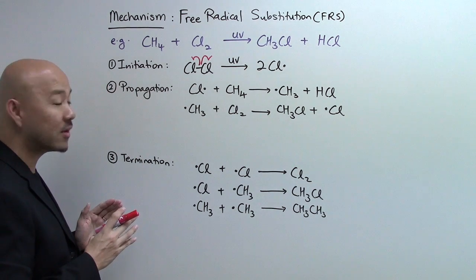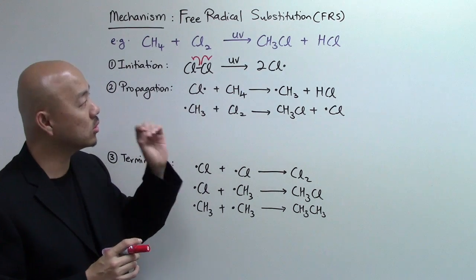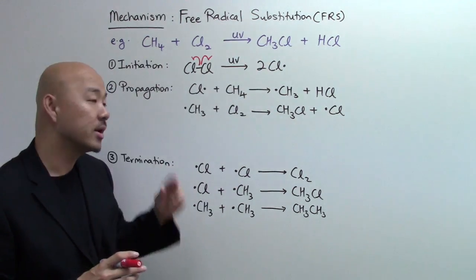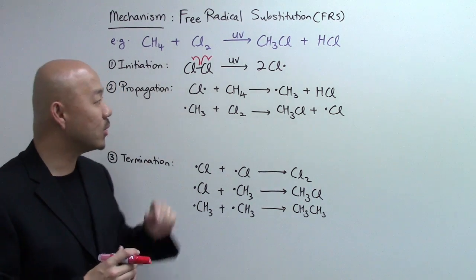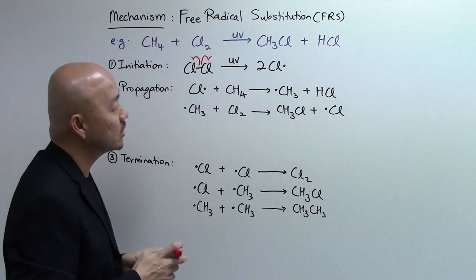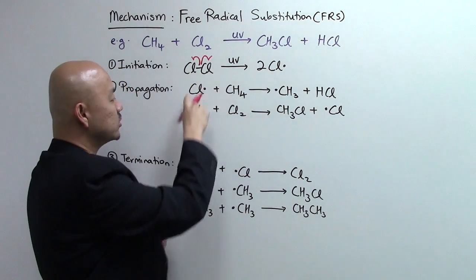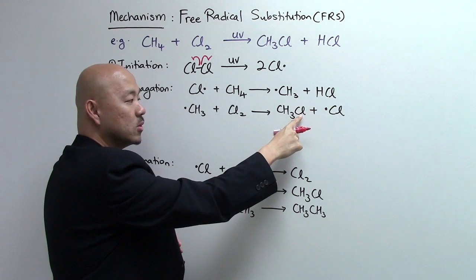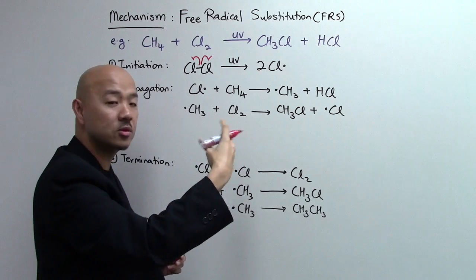This FRS is actually not a very good method to form your chloroalkane, just like the chloromethane. There are two factors we need to consider. Number one is what we call multi-substitution. What we have been doing over here is to form only a mono-substituted product. This is called mono-substitution.